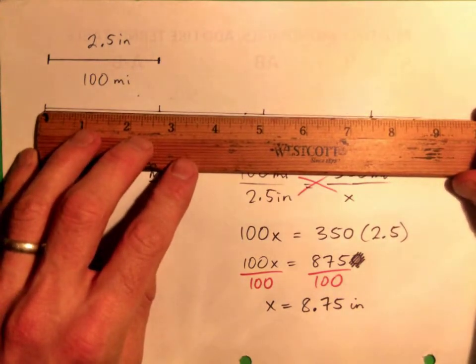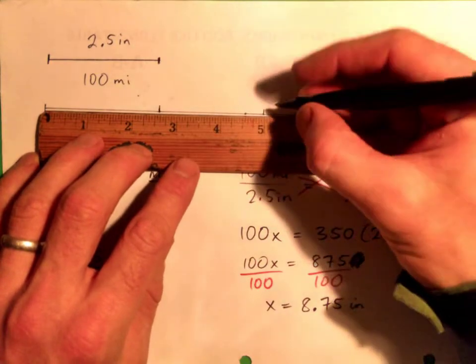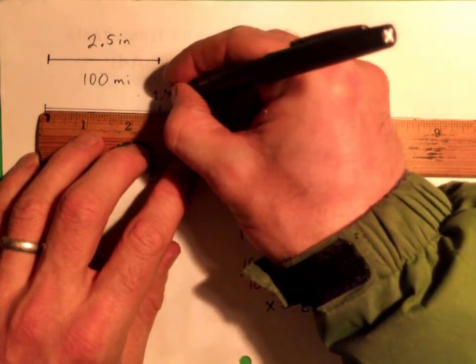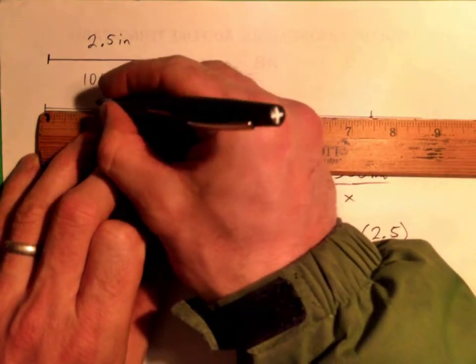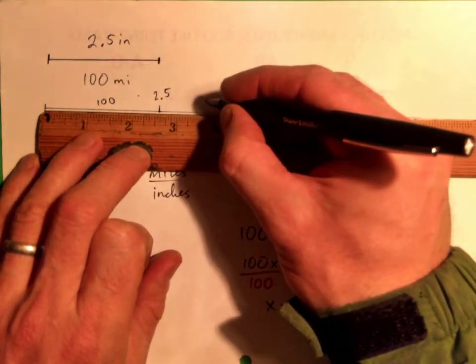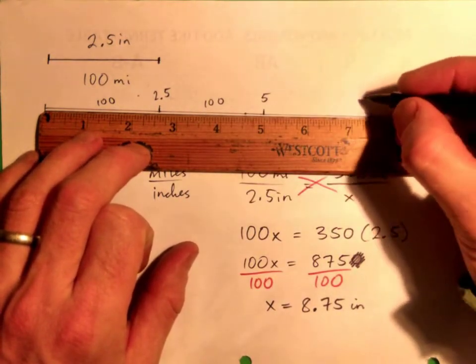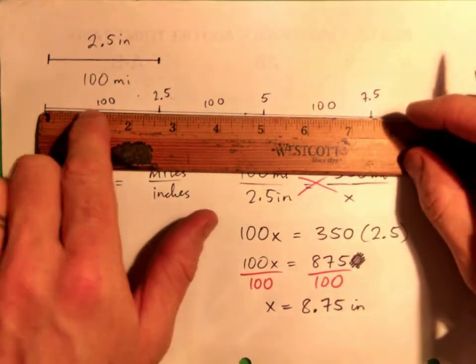And what it looks like is 2.5 inches is here, this is 2.5 inches. Another 2.5 inches gets us to 5 inches. So that's, if we think about inches, that's 2.5, that's 5 inches, 100 miles, another 100 miles, and another 100 miles gets us to 7.5 inches. So now we're at 300 miles, right?